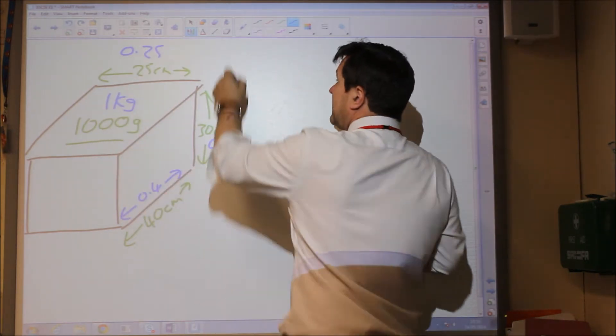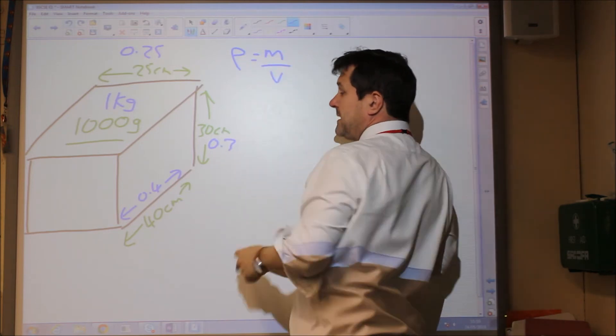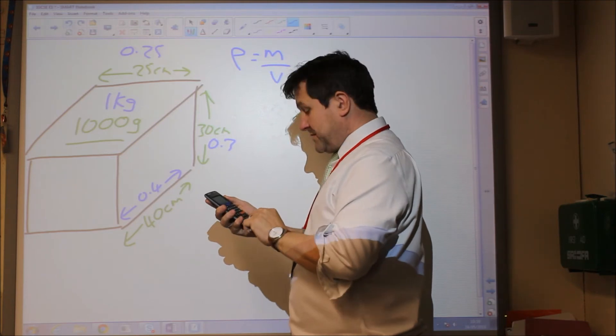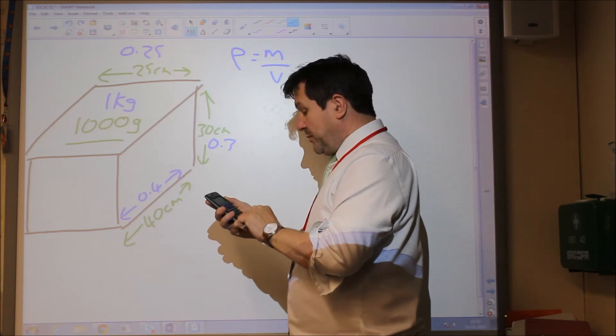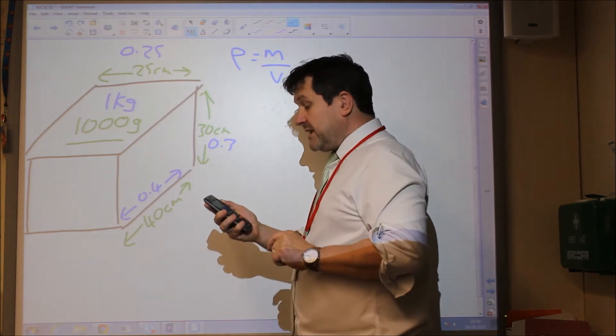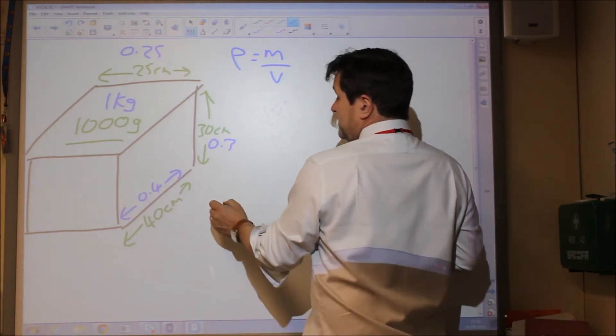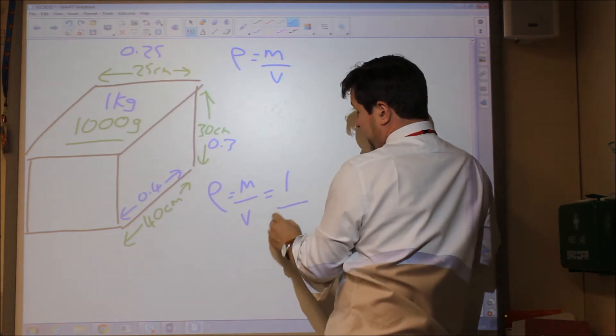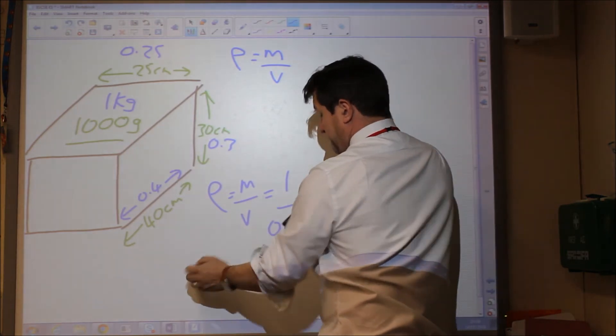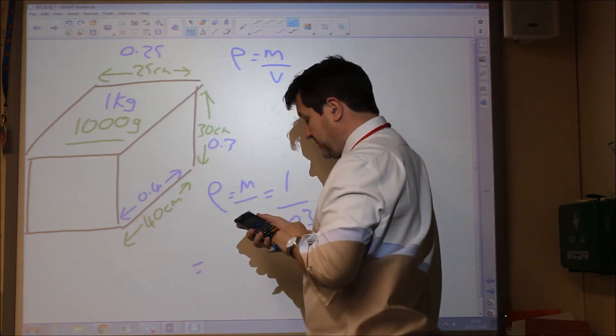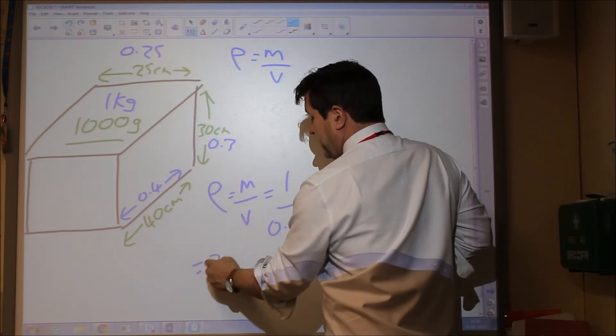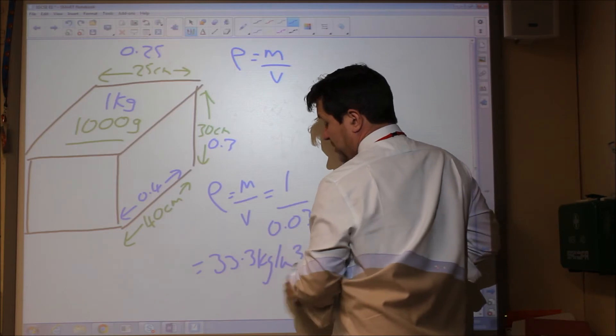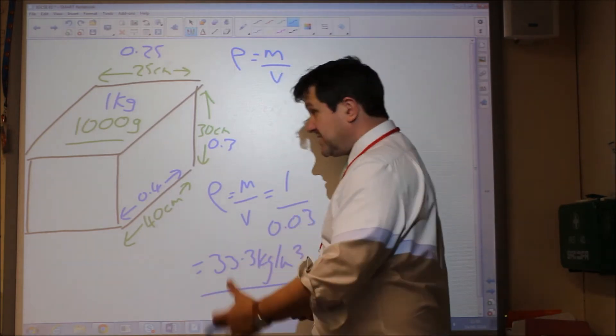So now we can say density is mass divided by volume. The mass is 1, and the volume is 0.4 times 0.3 times 0.25, and that equals 0.03. So if density is mass divided by volume, it's 1 kilogram divided by 0.03, which equals 33.3 kilograms per metre cubed. Again, very low density, this object.